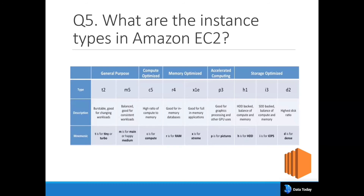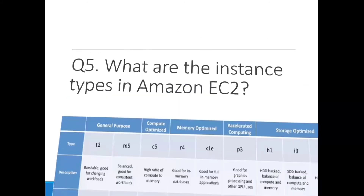Memory Optimized instances like r4 are good for large-scale databases, datasets, and in-memory computation — useful when creating EMR clusters. Accelerated Computing instances like p3 are good for graphics and GPU-related workloads (p stands for pictures as a memory aid). Storage Optimized instances include h1, i3, and d2 — they balance compute and memory for high disk throughput, with d2 offering the highest disk ratio.